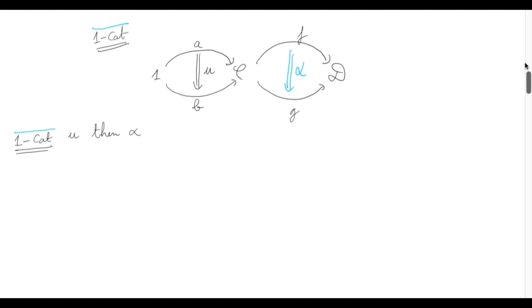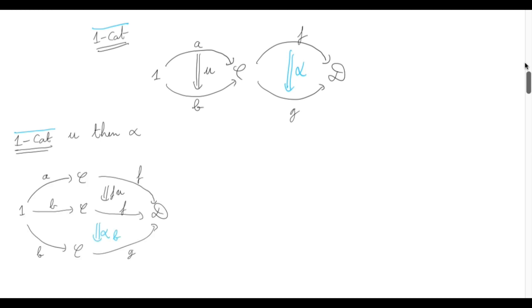What does it mean to give meaning to such a composition? It means we must be independent of the different ways to interpret it. One way is to start with U and then apply alpha. We keep F fixed and travel through U, going from FA to FB through FU. Then from FB, which is an object of D, we travel to GB — keeping B constant and traveling through alpha. Since this is between functors starting from 1, it will be some morphism in D.